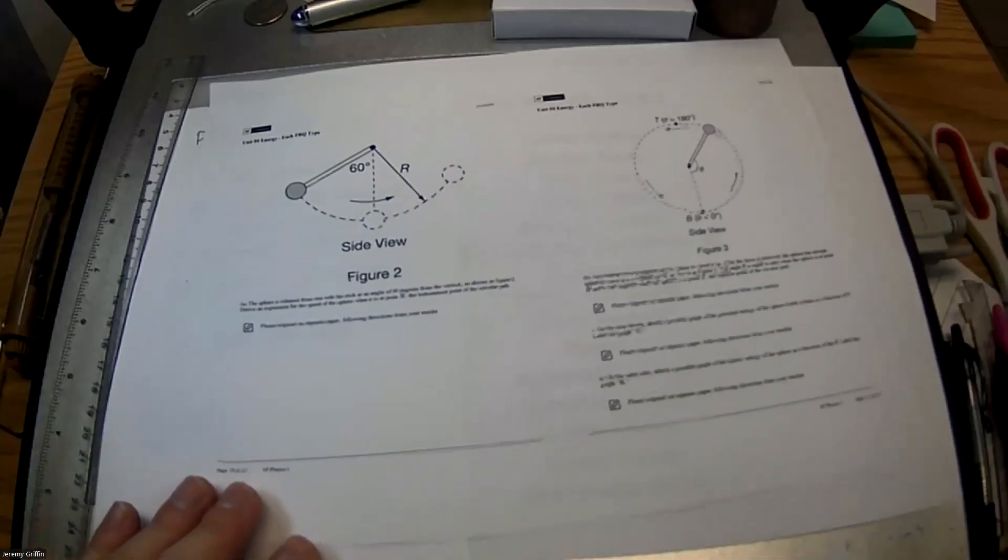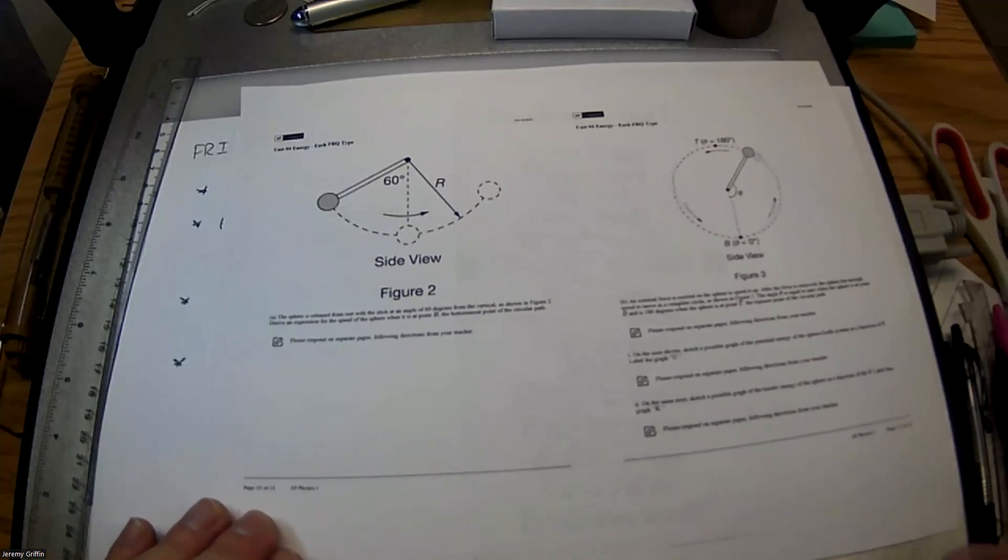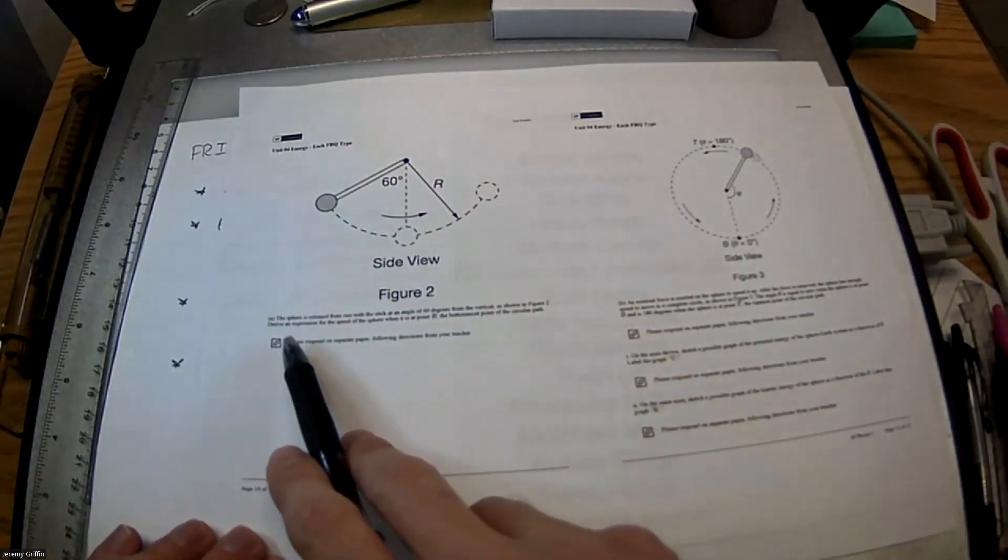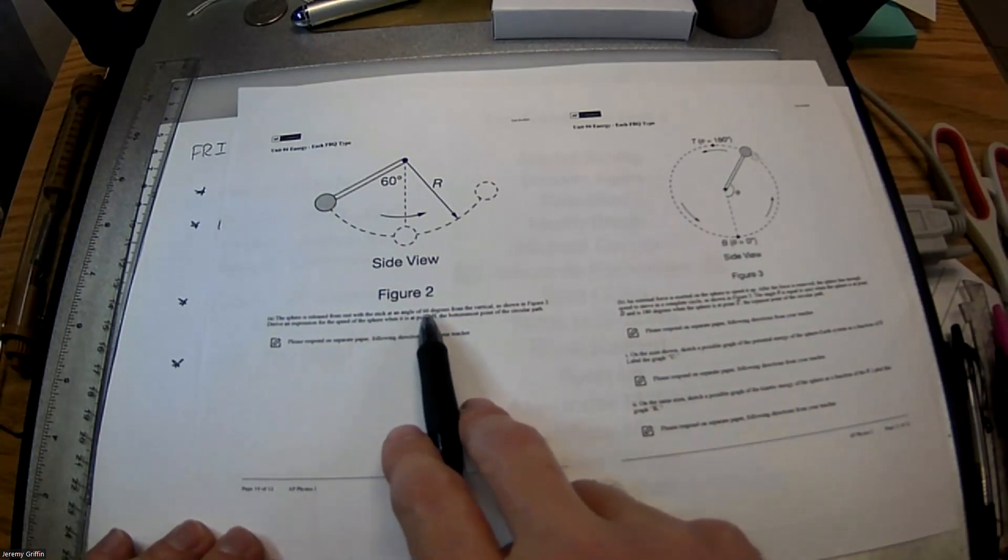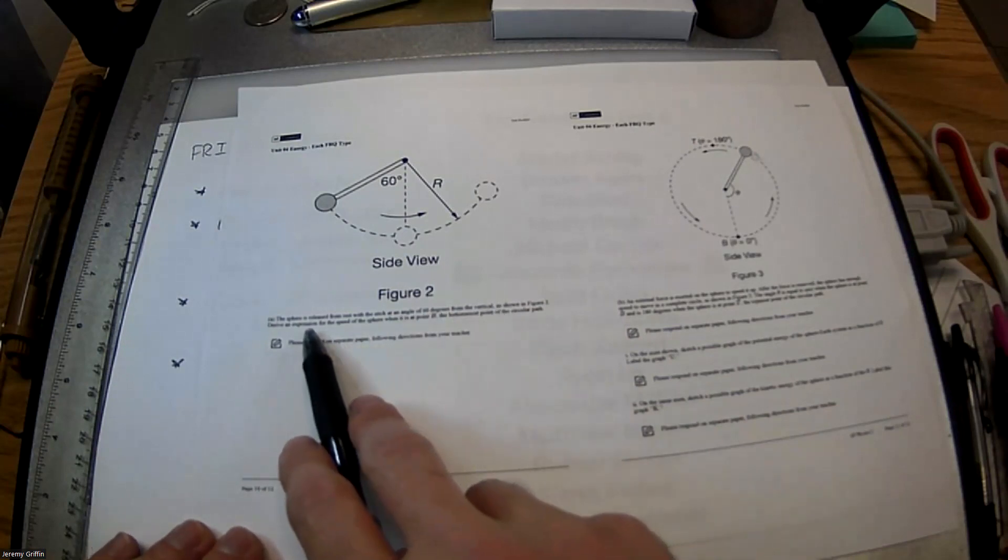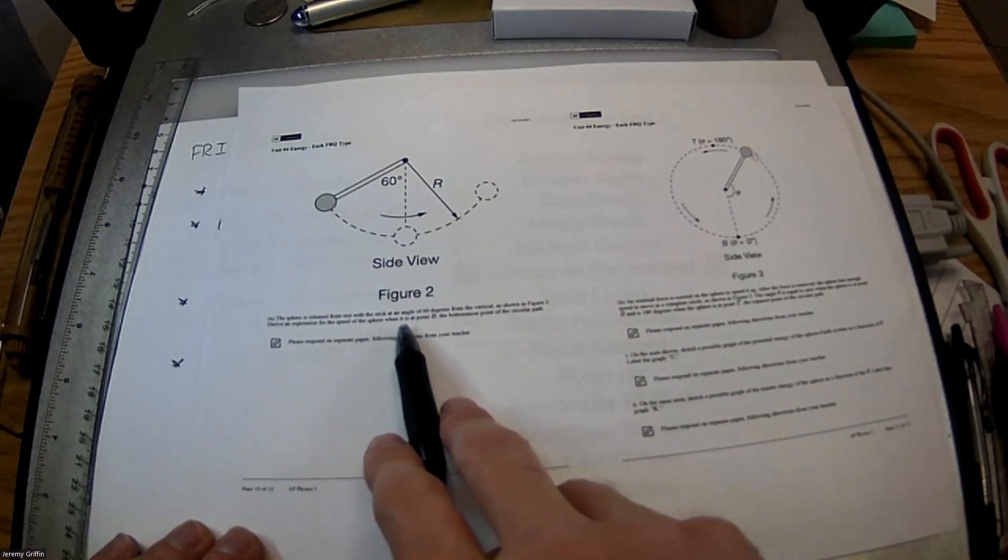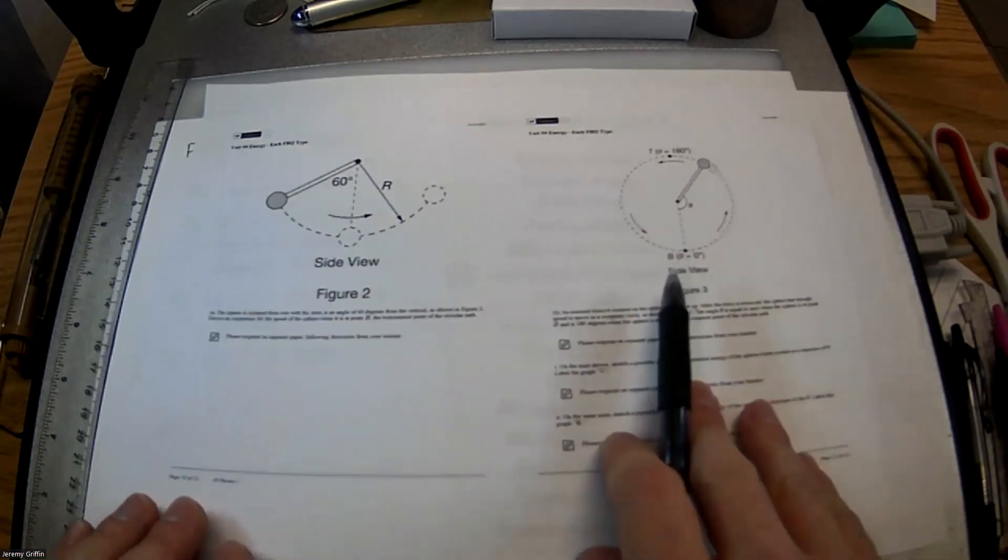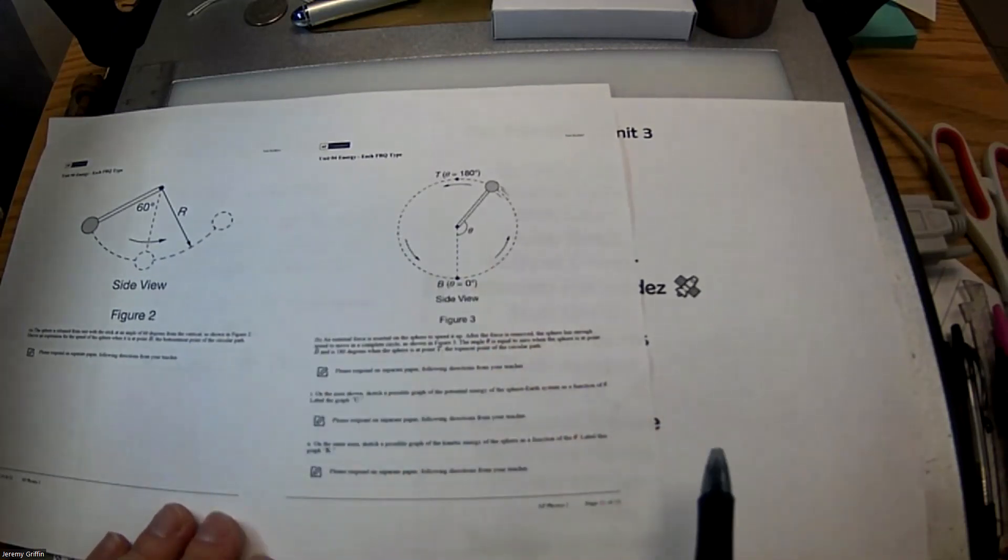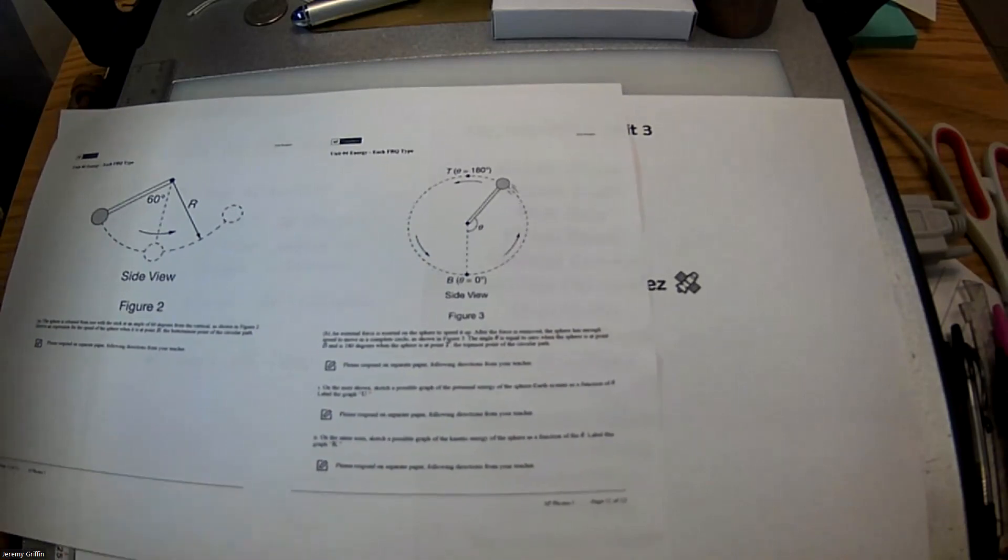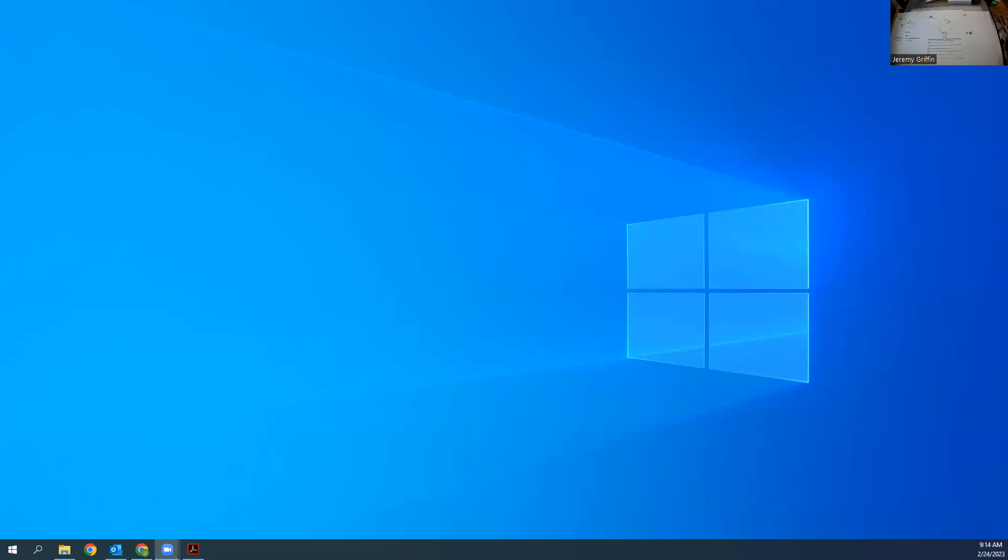All right, so this one I like a lot. It takes some creative thinking though. Let's say we've got a pendulum starting from rest, taken 16 degrees from the vertical. Derive an expression for the speed of the sphere when it is at point B. Point B is at the bottom of the circular path. Since we've got a short day, let's do it this way. I'm going to flip my screen over and we'll just put the answers as we go along here.